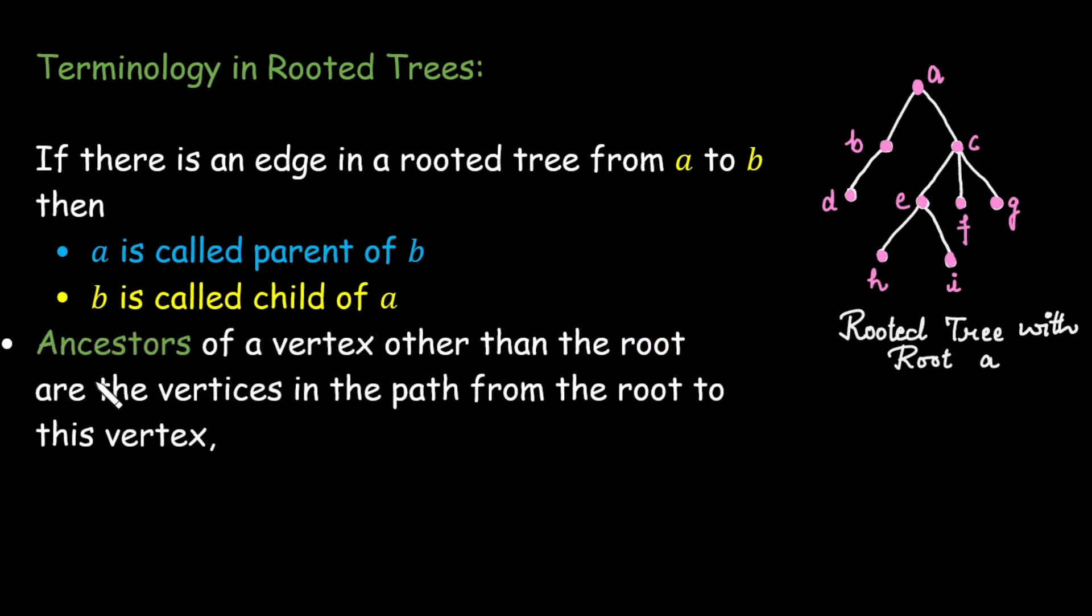Another term we have is ancestors. Ancestors of a vertex other than the root are the vertices in the path from the root to this vertex.